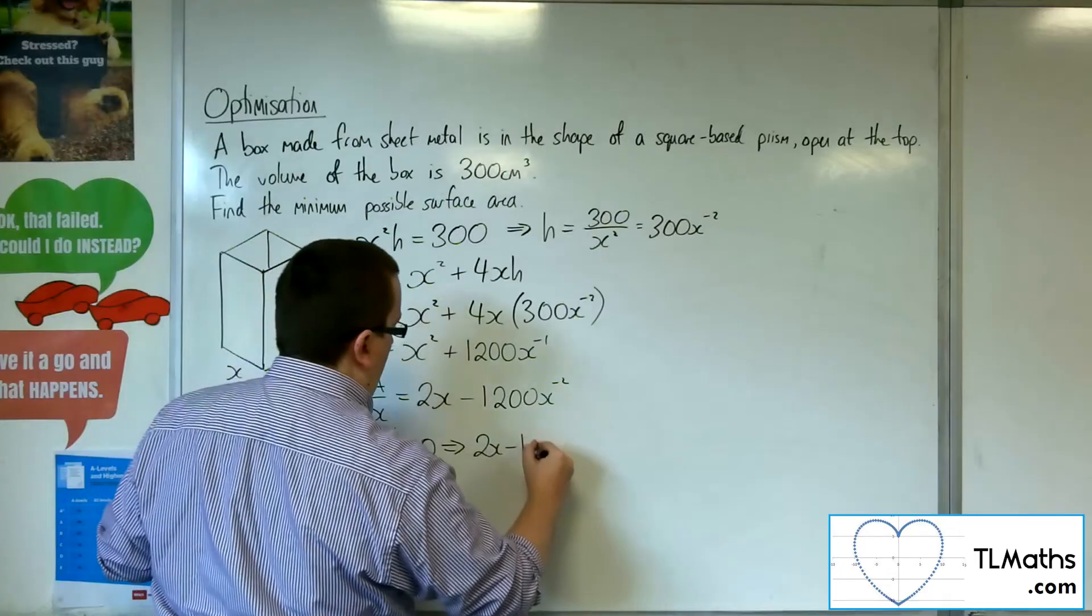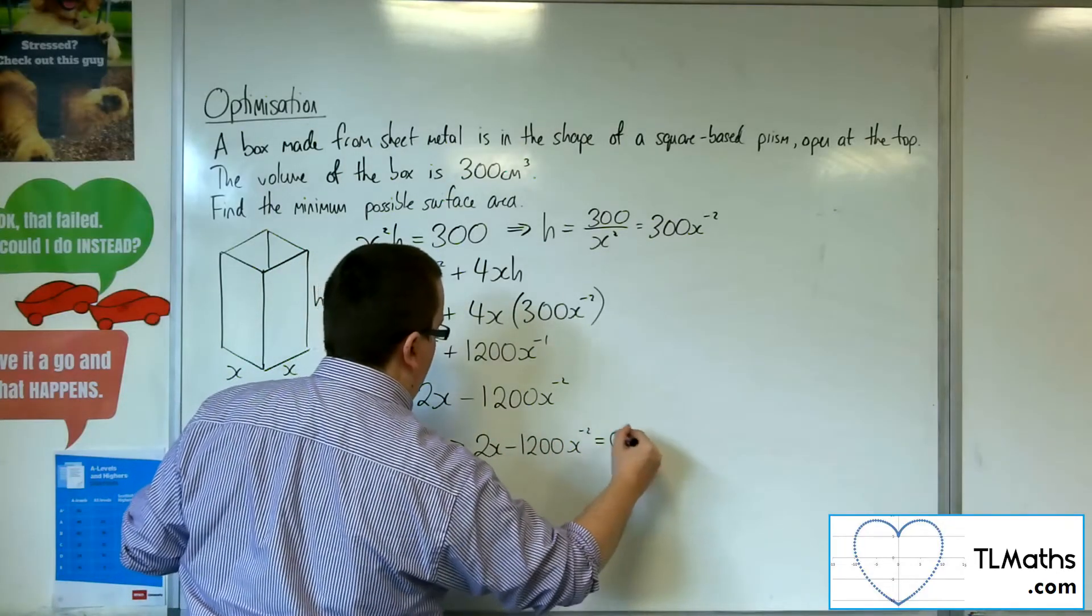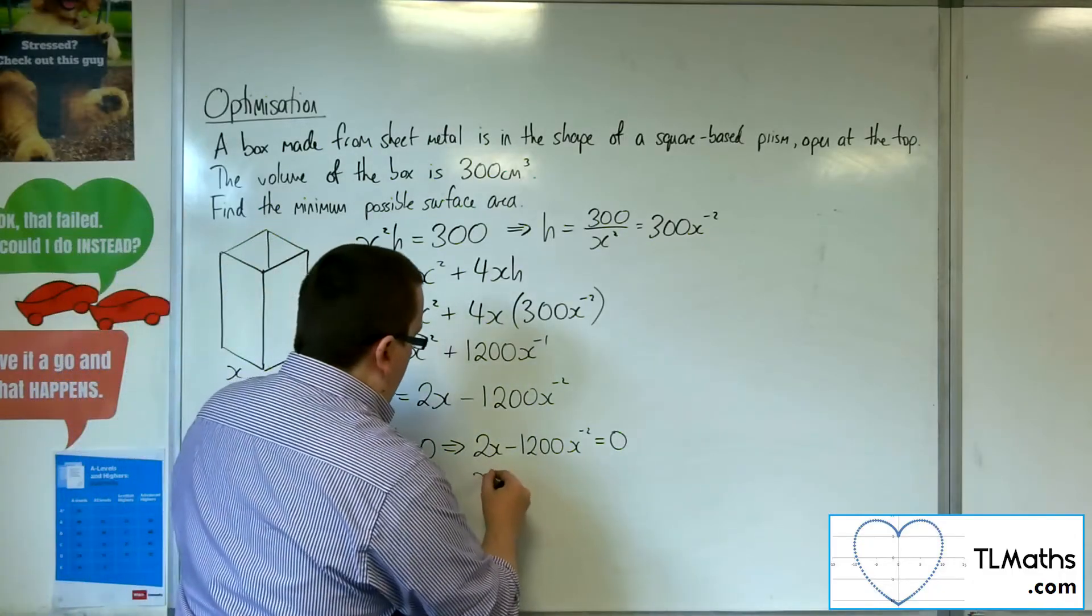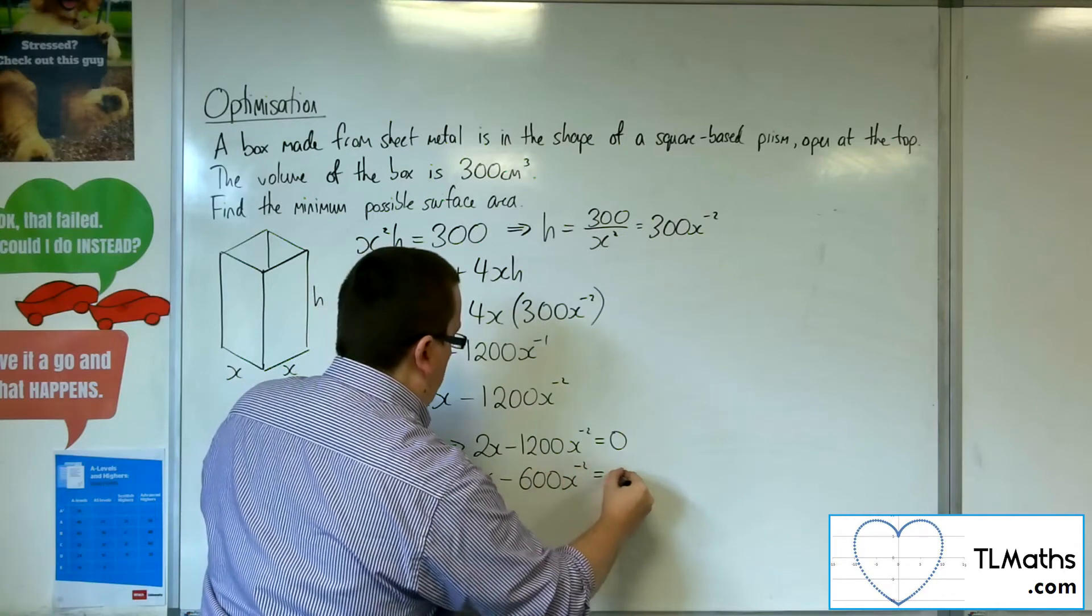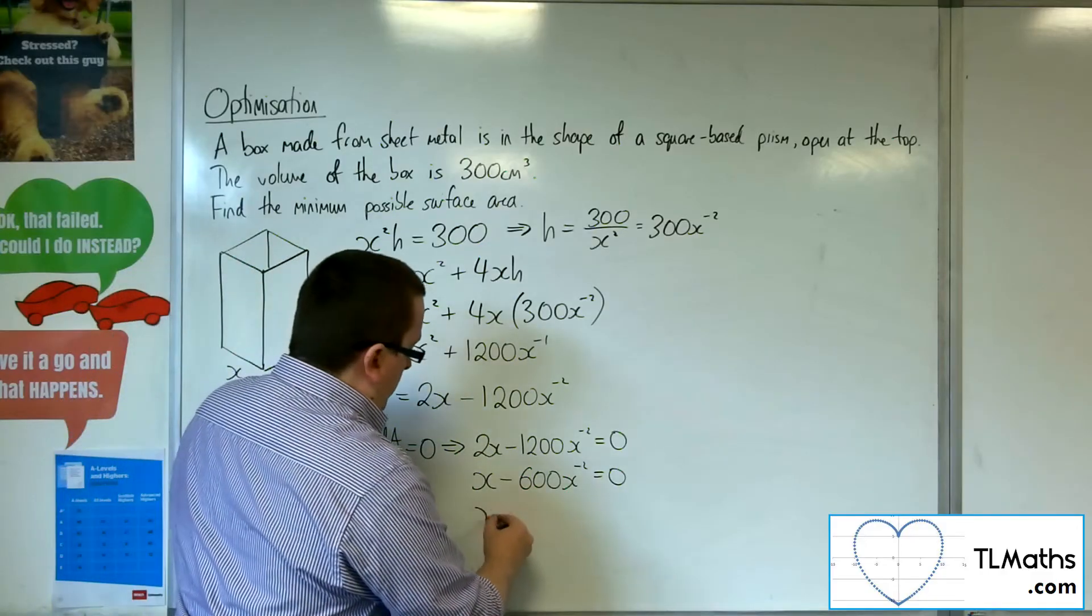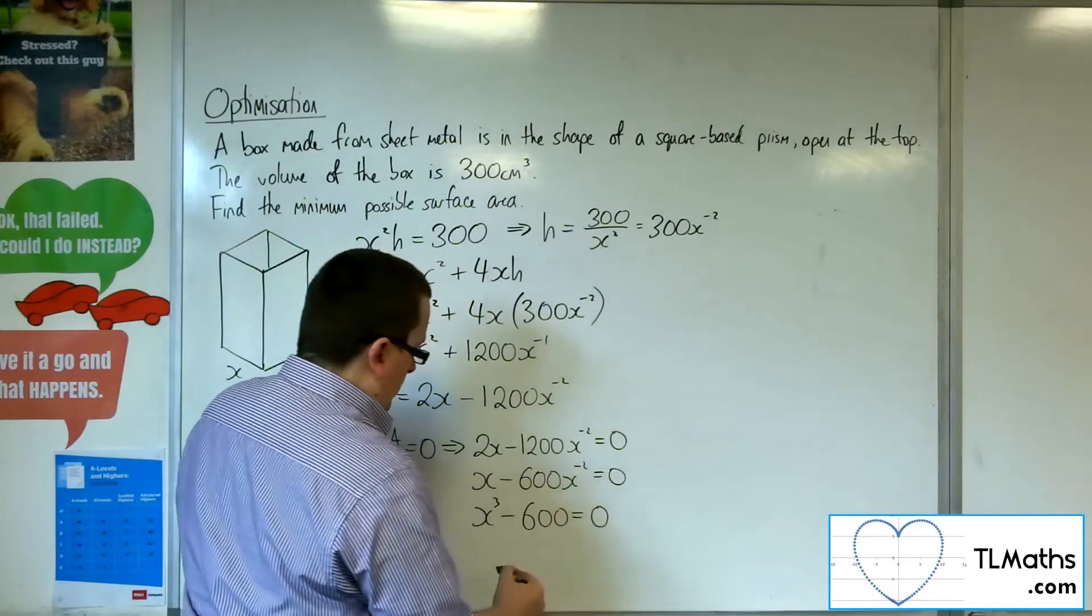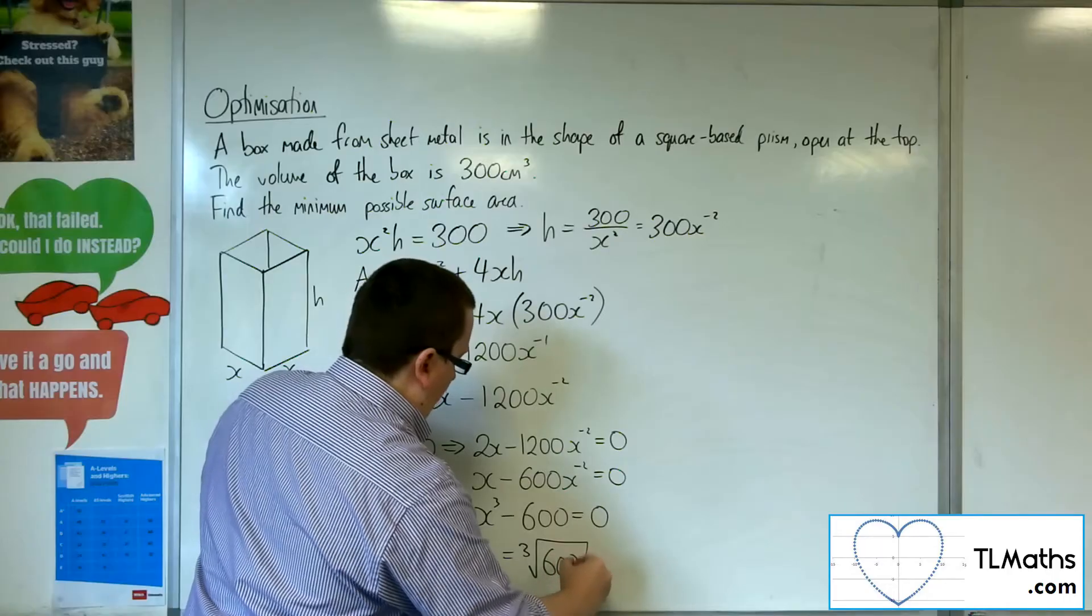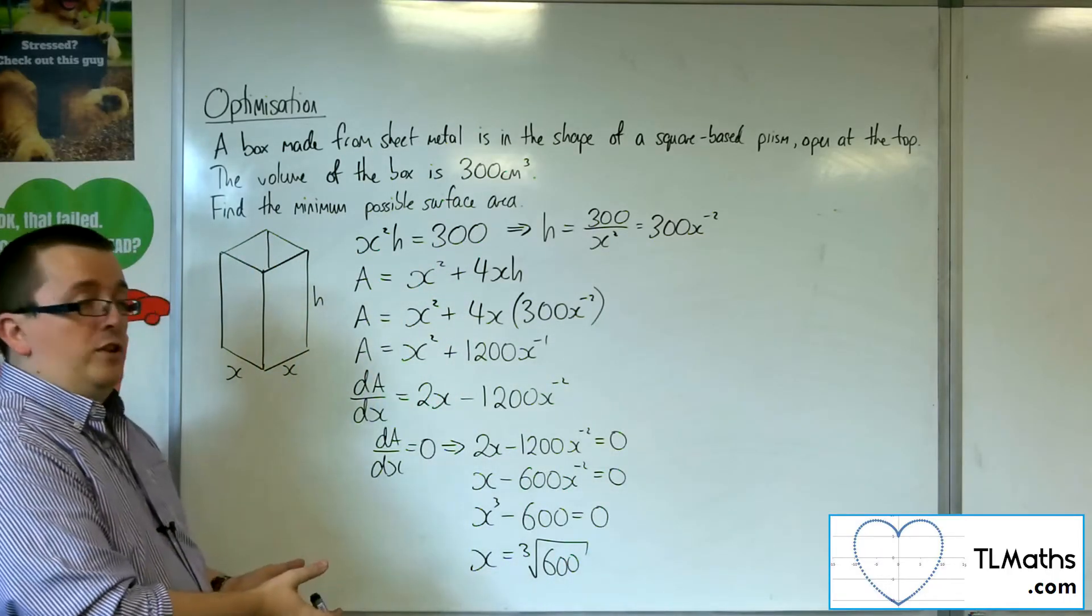So 2x take away 1200x to the minus 2 is equal to 0. So if I divide through by 2 first, I get x take away 600x to the minus 2 is 0. Now I can multiply everything by x squared to get x cubed take away 600 equals 0. So x is going to be the cube root of 600. Okay, that's the single solution to this.